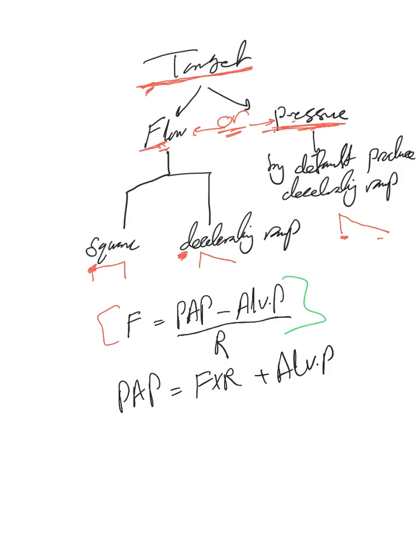The flow target is to keep this target the way we decided or told the ventilator to keep it. So the ventilator cannot do anything here. The only thing that can go up and down here is to keep the target here.